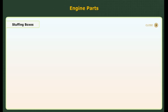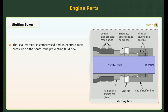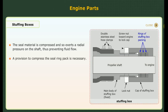Stuffing box. Where fluid leakage past a rotating or sliding shaft is required to be prevented, a stuffing box packed with sealing material is interposed. The seal material is compressed and so exerts a radial pressure on the shaft, thus preventing fluid flow. A provision to compress the seal ring pack is therefore necessary.